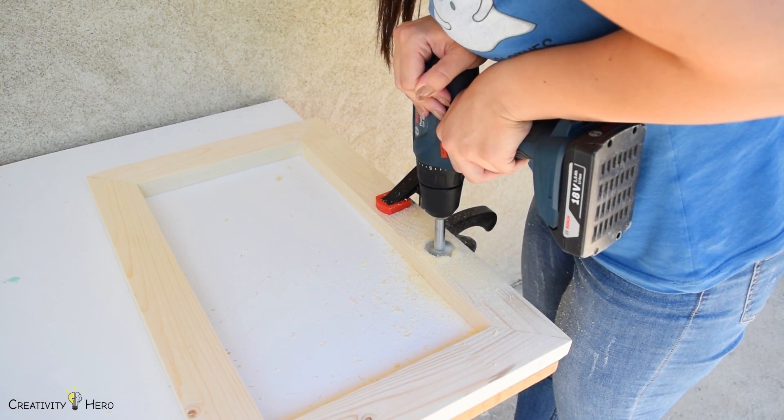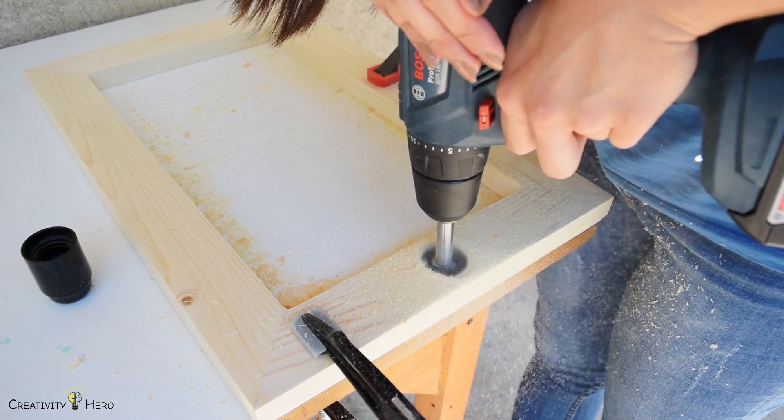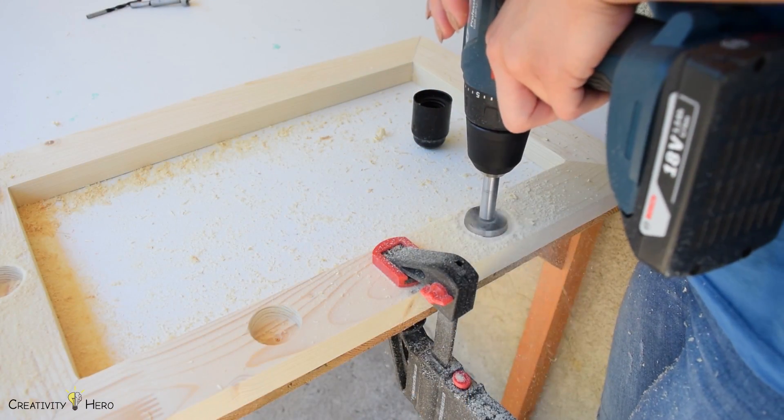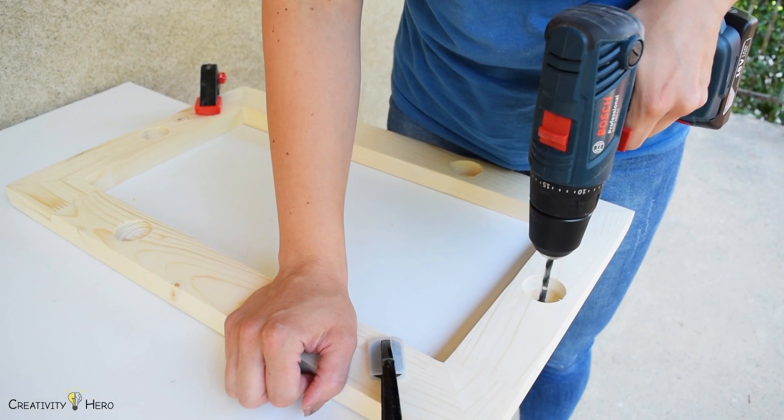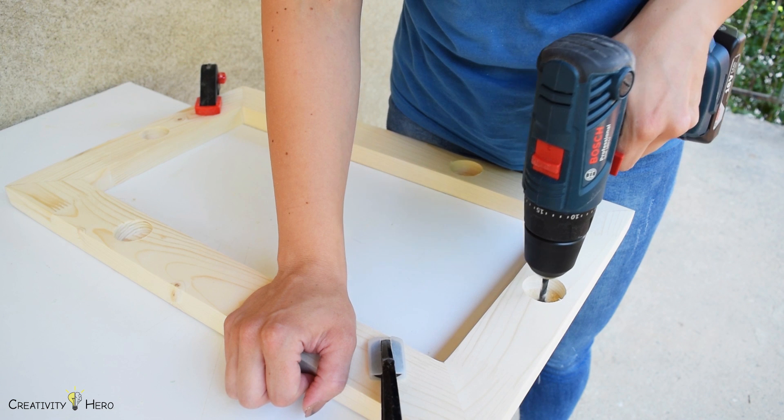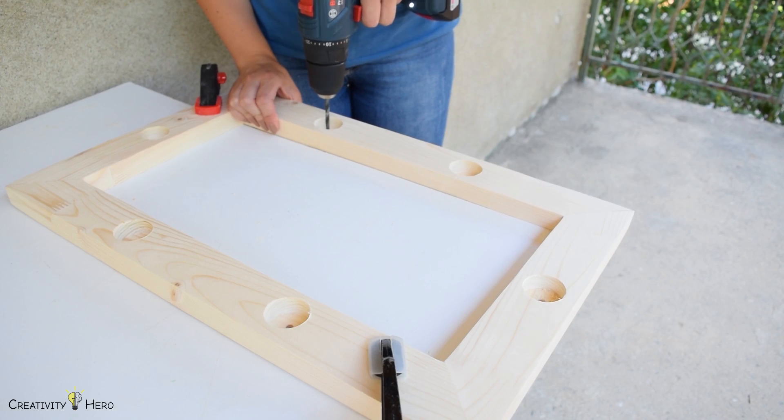I used a 35 millimeter forstner bit to countersink holes halfway through the wood around 15 millimeters which is enough to fit in the sockets. In the center of these holes I made additional holes with 6 millimeter bit all the way through the wood for the cord to pass through.